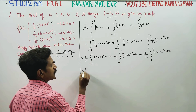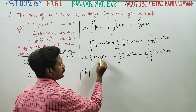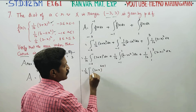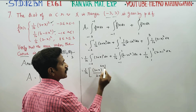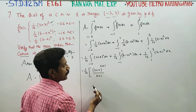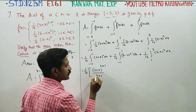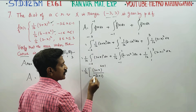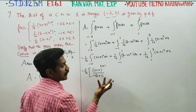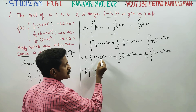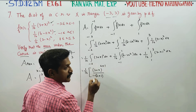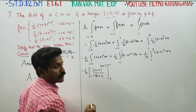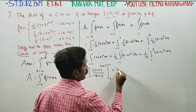Now we integrate each part. For the first part, integrate (1/16)(3 + x)^2 dx from minus 3 to minus 1. Using the power rule, (3 + x)^2 integrates to (3 + x)^3 divided by 3. Plus (1/16) for the second part.